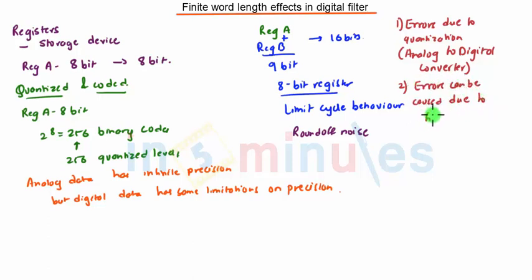The second thing is errors can be caused due to filter coefficients; here also the reason is quantization. The third thing is limit cycles; there can be overflow in addition. These are some of the finite word length effects. Thank you.